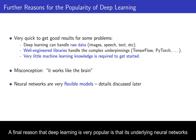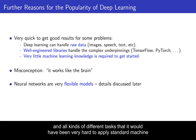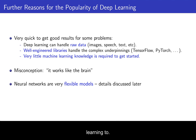A final reason that deep learning is very popular is that its underlying neural networks are really flexible. This allows you to apply them to all kinds of different data and tasks that would have been very hard to tackle with standard machine learning. We'll see details about this in a later video.